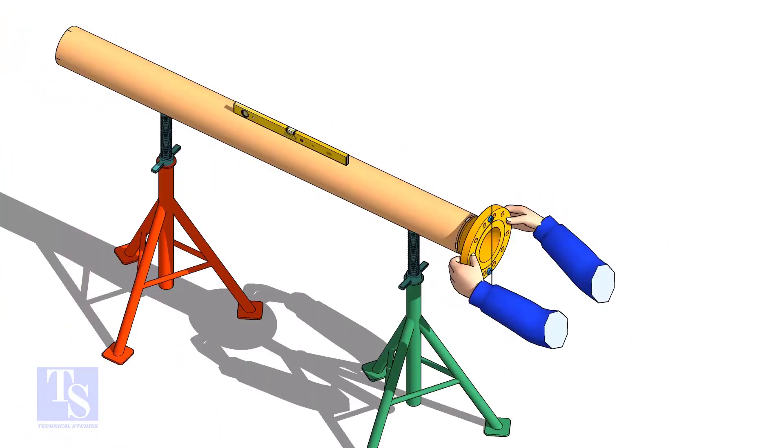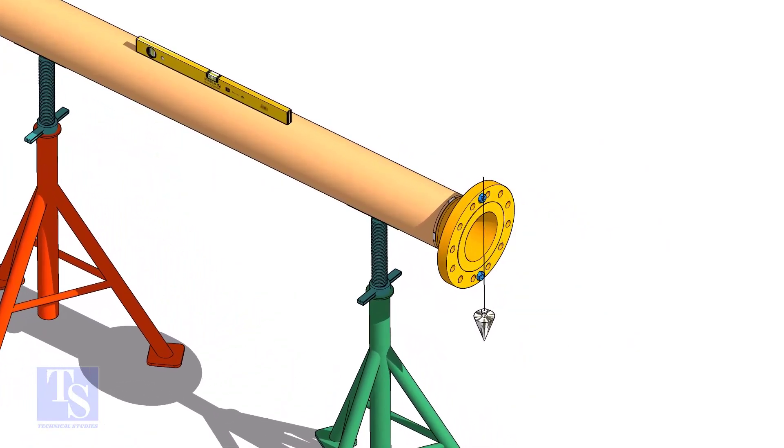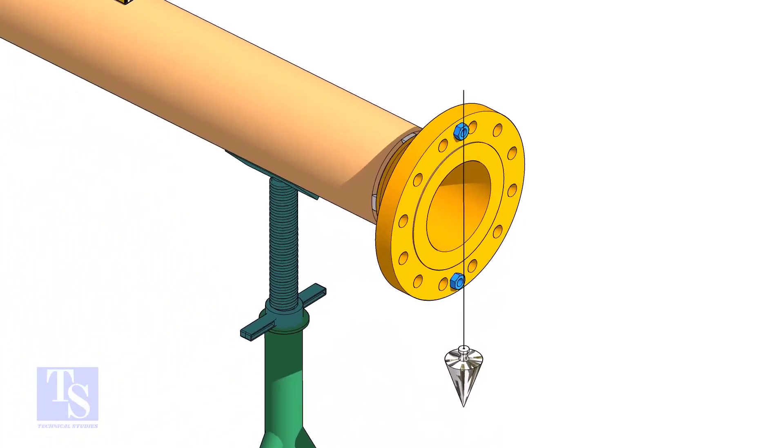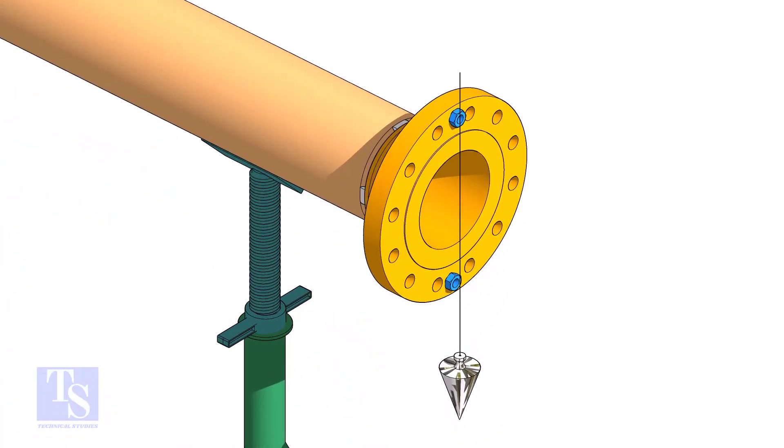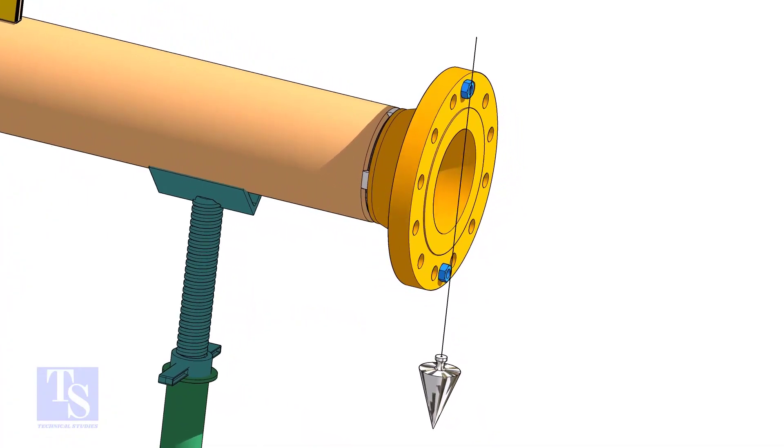In this method, let us learn how to fit up a flange with a pipe using a plumb. Level the pipe, put a plumb through the center of the flange on a nut.